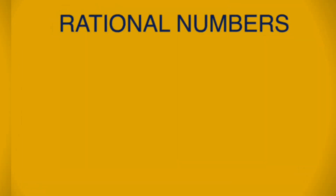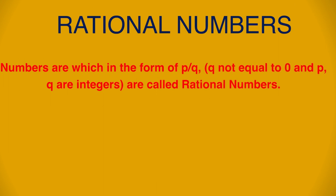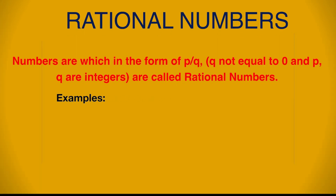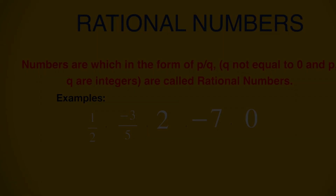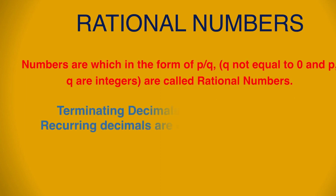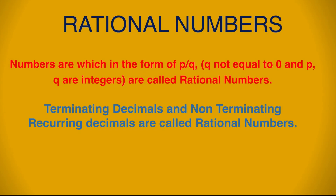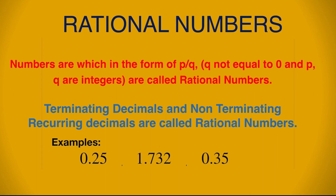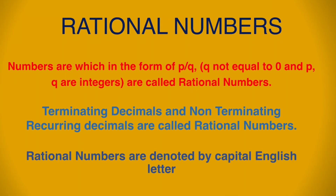Next number set is rational numbers. Numbers in the form of p/q, where q ≠ 0 and p, q are integers, are called rational numbers. For example: 1/2, −3/5, 2, −7, 0, and so on. Another definition: terminating decimals and non-terminating recurring decimals are called rational numbers. For example: 0.25, 1.732, 0.35̄, 1.05̄, and so on. Rational numbers are denoted by the capital English letter Q.